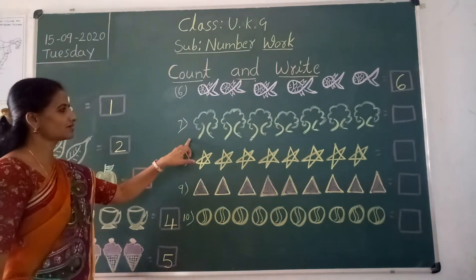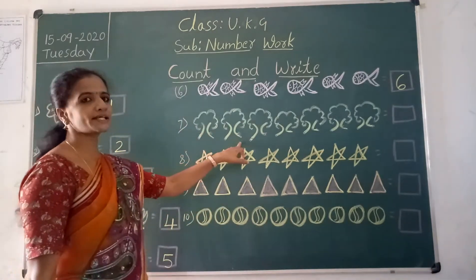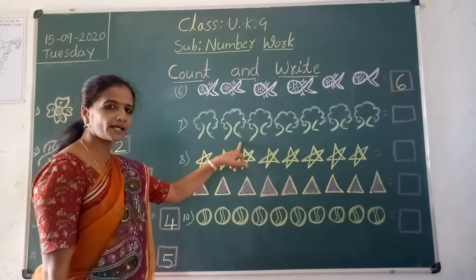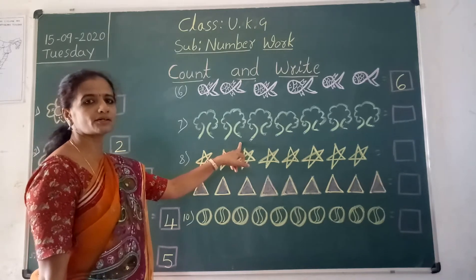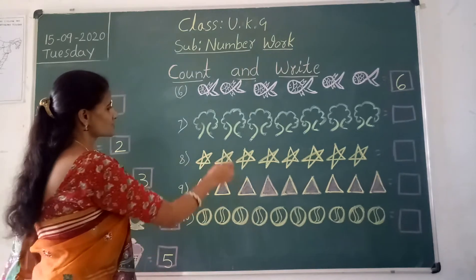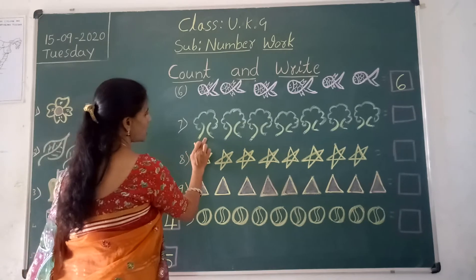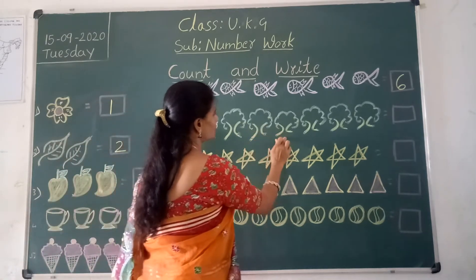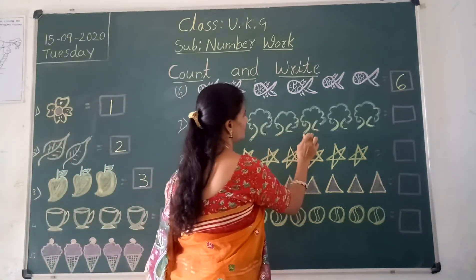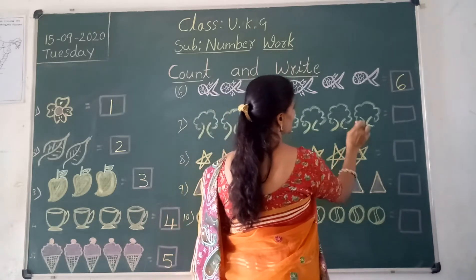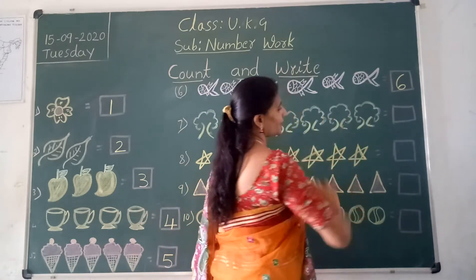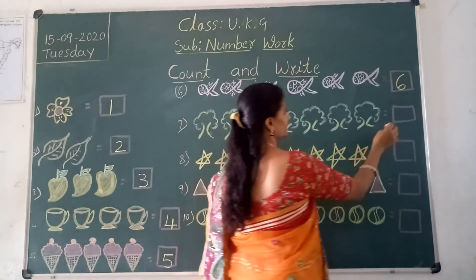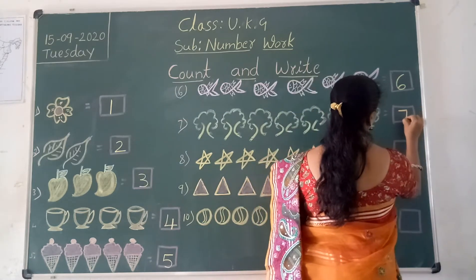Next picture. What are these? Trees. How many trees are there here? We should count: 1, 2, 3, 4, 5, 6, 7. How many? 7. We should write in this box — 7.